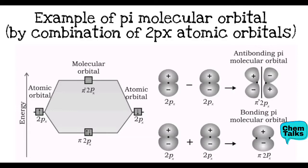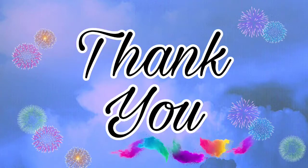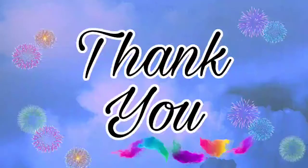So we have understood MOT features, interaction, bonding and anti-bonding molecular orbital formation, their energy levels, and how sigma molecular orbitals and pi molecular orbitals are formed. We will continue this in the next part of the video. Till then, if you have any doubt, you can mention it in the comment section. Thank you.